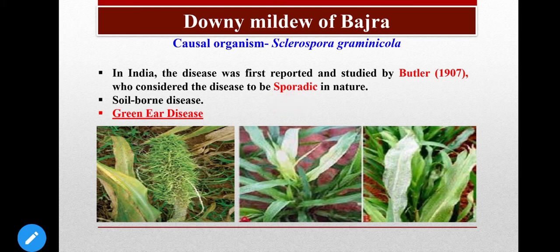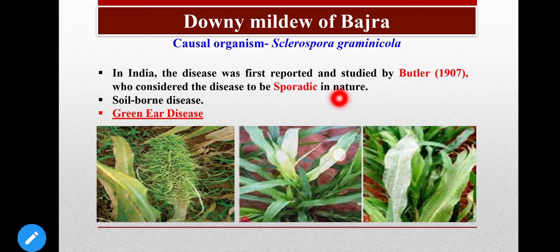Epidemic means the disease is in severe form and is periodical. Sporadic means it is occasional. If a disease is confined to a specific area, then it is endemic. This disease is soil-borne in nature, because the downy mildew fungus produces oospores that can hibernate in soil for many years as resting spores. That is why it is a soil-borne disease.